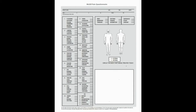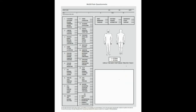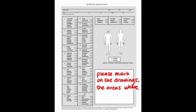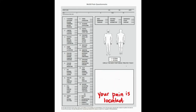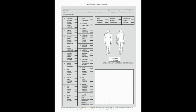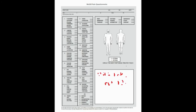Now let's begin our questionnaire. Hello, may I ask your name? So let's find out where your pain is located. Please mark on the drawings below the areas where you feel pain. Beside them, put E if it's external or I if it's internal. If it's both, put E-I.